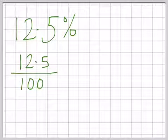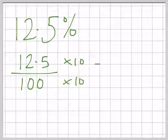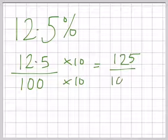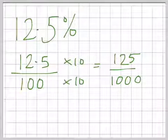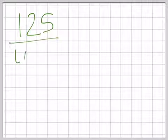So to get rid of the decimal element, we're going to times the top and the bottom by 10 and that will give us 125 over 1000. Remember that number, I'm going to take it on to the next page. Let's just get rid of that. 125 over 1000.